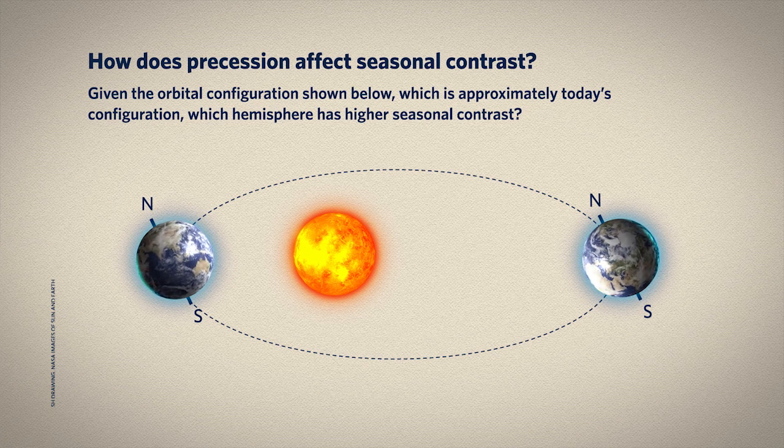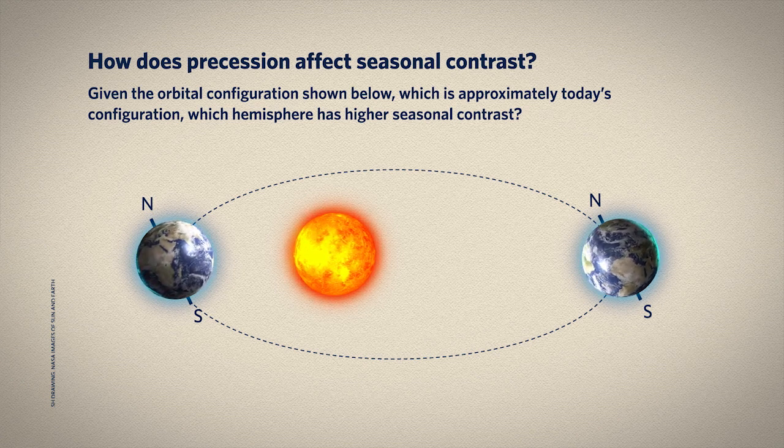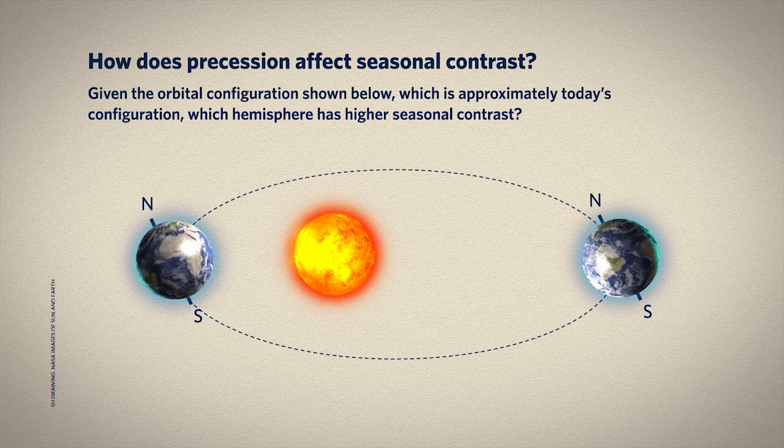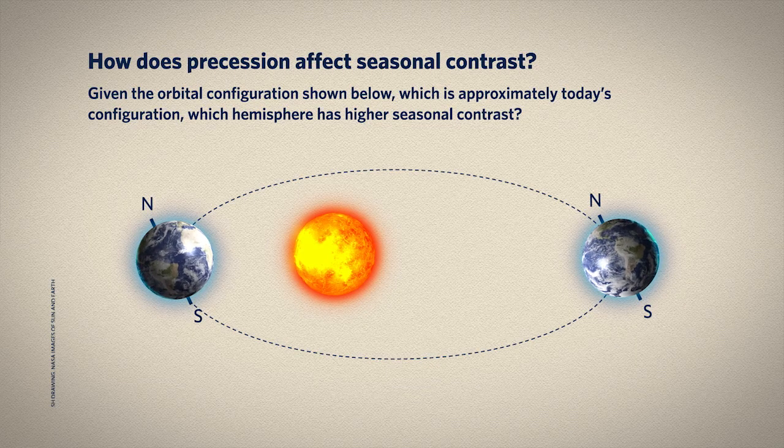So the southern hemisphere has summer when we're slightly closer to the Sun, and winter when we're slightly farther. Based just on solar radiation coming in, the southern hemisphere has higher seasonal contrast than the northern hemisphere. Do note that the seasons have everything to do with the tilt of Earth's axis, not Earth's distance from the Sun. If that seems to contradict your mental model of the seasons, remember that when it's winter in the northern hemisphere, it's summer in the southern hemisphere. If the Earth-Sun distance mattered for seasons, we'd all have the same seasons at the same time — which we don't.